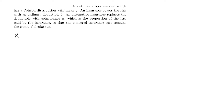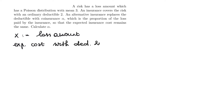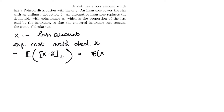We model the loss amount using a random variable X. The expected cost under the first insurance, with a deductible of 2, is given by the expected value of the left-censored and shifted random variable X with a deductible of 2. This expected value is the same as the expected value of X minus the expected value of the limited loss random variable.